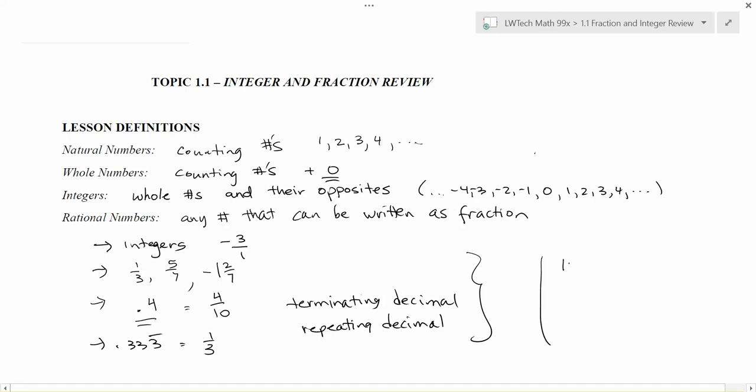So for some examples of things that are what we call irrational, some common examples are numbers like pi. You may have heard of a number constant called e, things like the square root of two. All of these are examples of irrational numbers. And what these are, are non-repeating decimals. They go on forever and ever and never end. So non-repeating and non-terminating decimals.